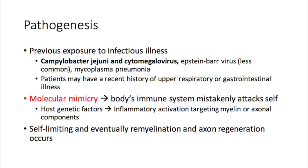From a pathogenesis point of view, this syndrome is associated with a previous history of illness or exposure. Patients can present with a past history of exposure to an infectious illness. The causative agents can include Campylobacter jejuni, cytomegalovirus, and less commonly Epstein-Barr virus and Mycoplasma pneumoniae. These patients can have a recent history of an upper respiratory tract infection or gastrointestinal illness. The underlying pathogenesis isn't 100% clear, but it's believed the body has an autoimmune response brought about by molecular mimicry of the organisms in question.